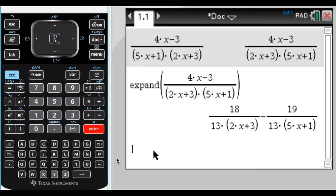So if you're doing it by hand, you would have started off with a over 2x plus 3 plus b over 5x plus 1. You might have used the cover-up method. You might have multiplied through, whatever.